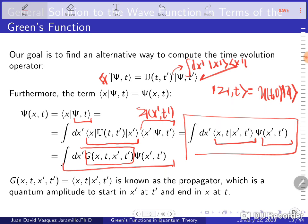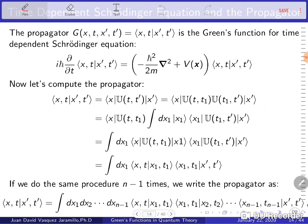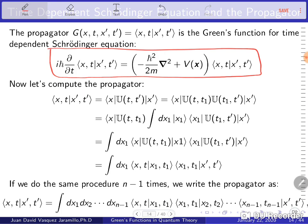This form looks like a convolution integral between that propagator and the wave function, and we define that as a Green's function, which has a very similar structure — just a bit more general — to the structure we have for solving the electromagnetic wave equation using Green's functions. The propagator is the quantum amplitude to start at x-prime at t-prime and end at x at t.